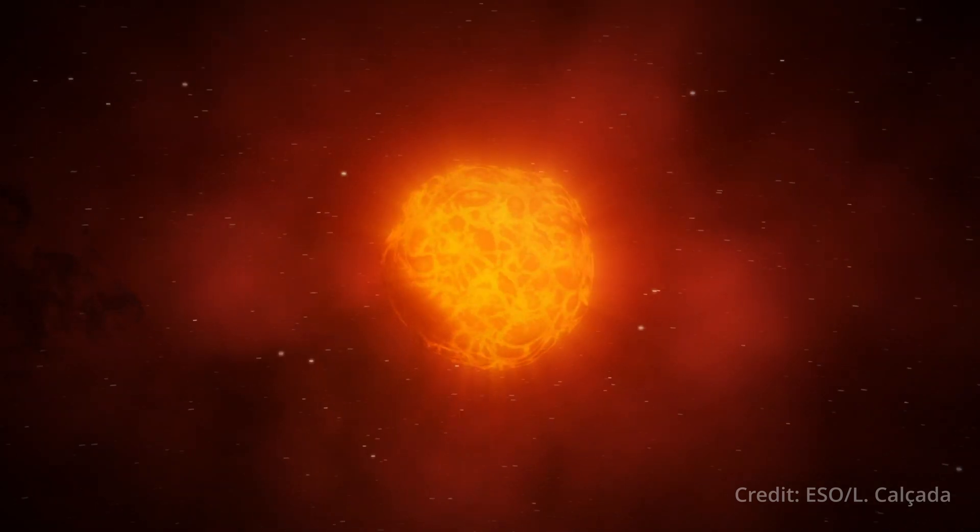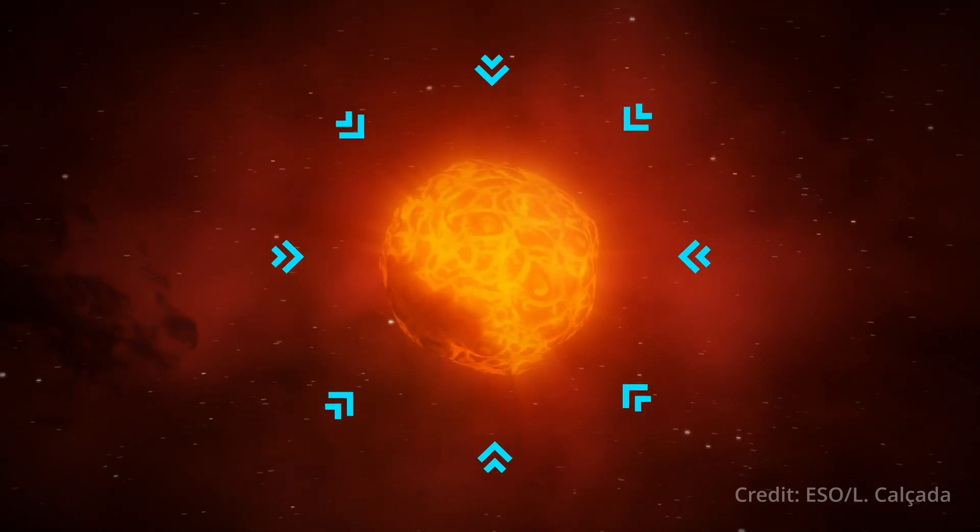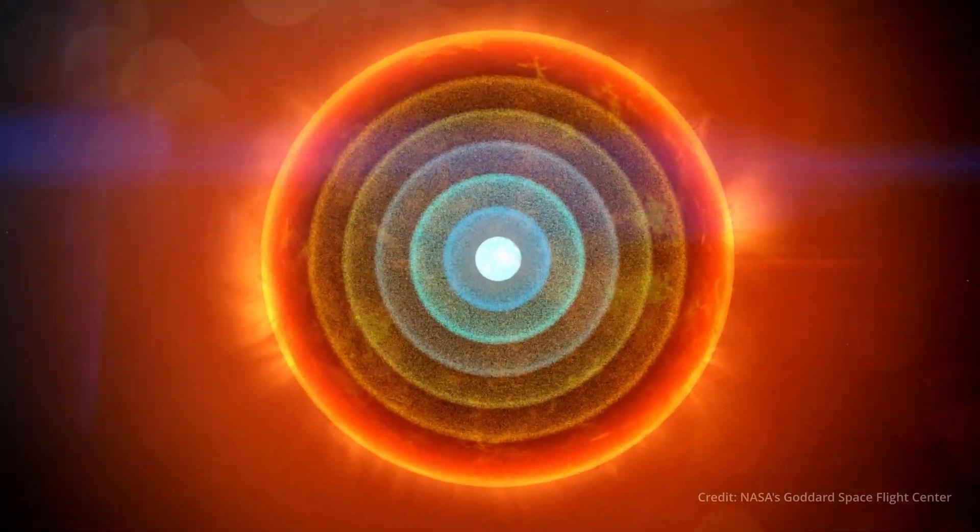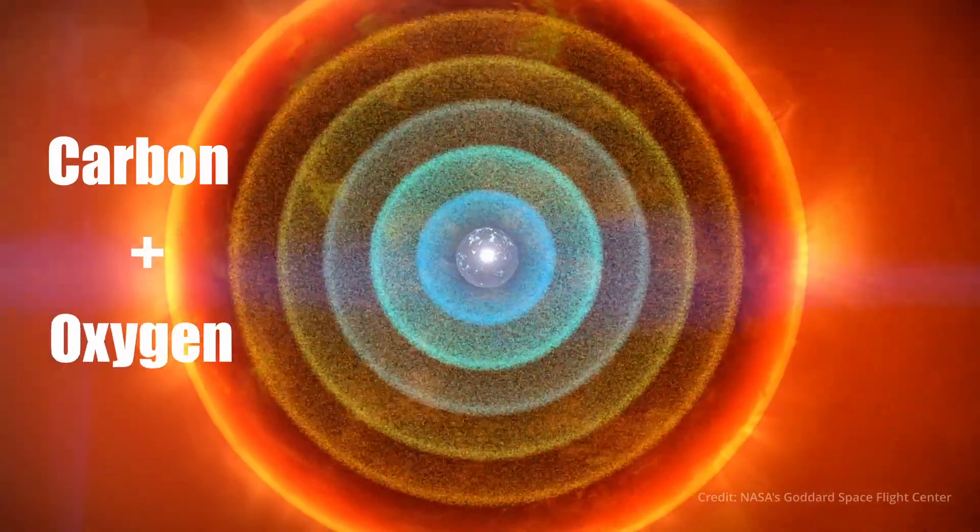But most importantly, it counteracted the star's own gravity. When the star started to run out of hydrogen, it began fusing helium into heavier elements, such as carbon and oxygen.